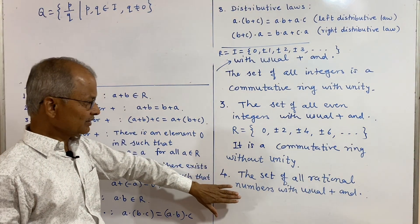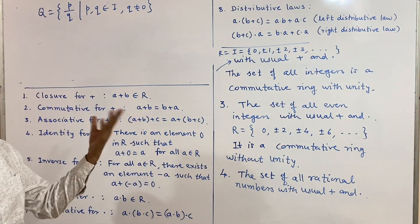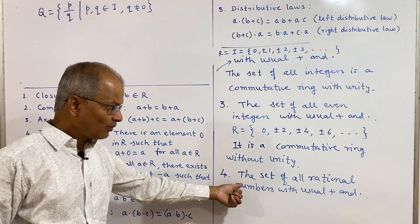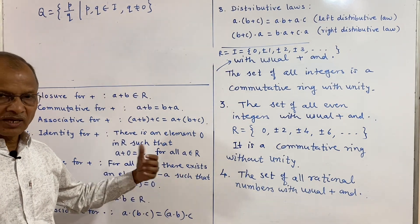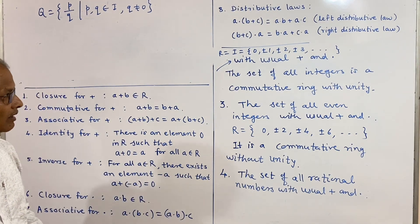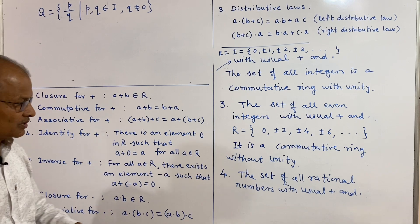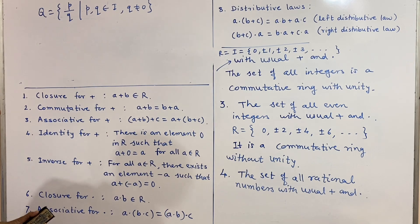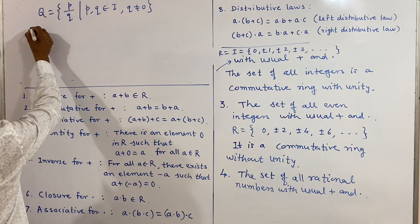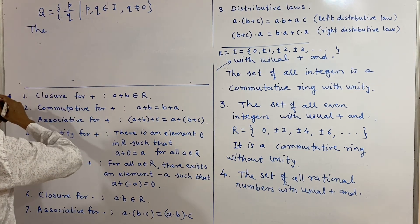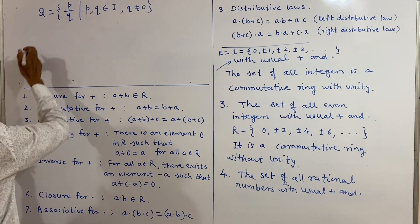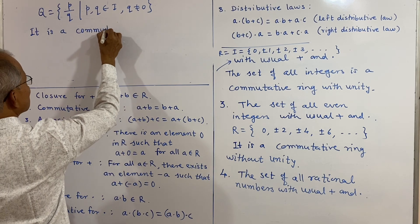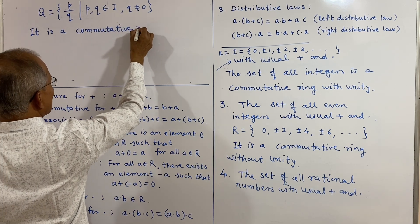Thus all eight laws hold and therefore Q is a ring. The unit element 1 is a rational number, and multiplication is commutative. Therefore, the set of rational numbers with usual addition and multiplication is a commutative ring with unit element, just like the set of integers.